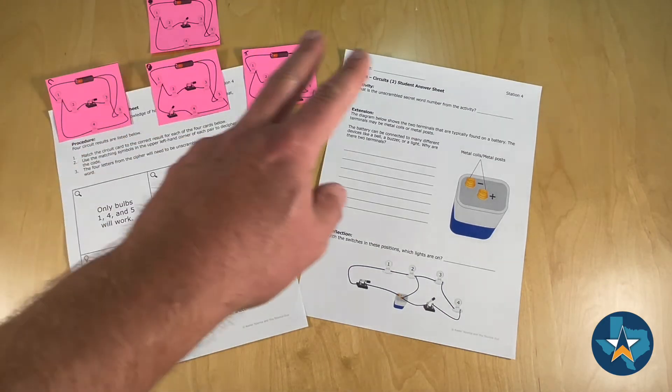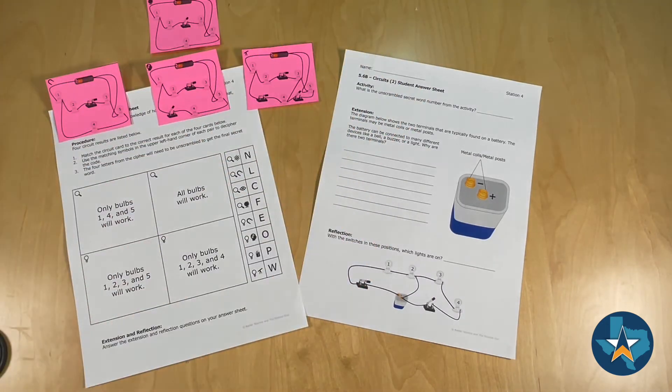You'll also have four circuit cards that will be used with this sheet. The circuit cards can be found on the teacher only page. We recommend printing them out on colored paper like you see here.